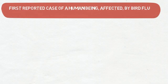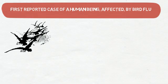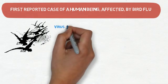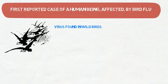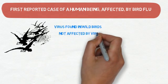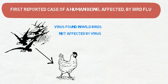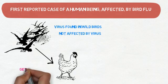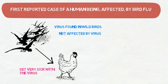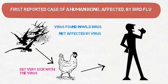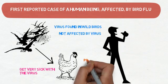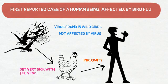This is the first reported case of a human being affected by bird flu. Bird flu is caused by a virus and this virus is found in wild birds. Interestingly, the wild birds are not affected by the virus. But wild birds pass on the virus to birds we humans raise for food, such as chickens and ducks. These birds get very sick with the virus, and since many people have close contact with birds raised on farms, this deadly virus is passed on to people.